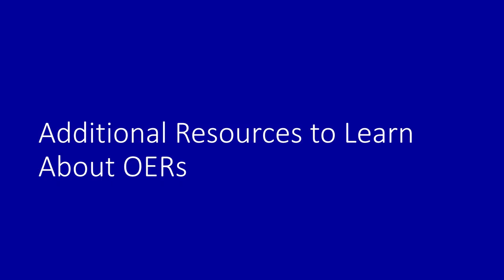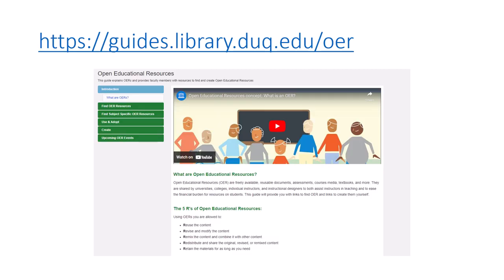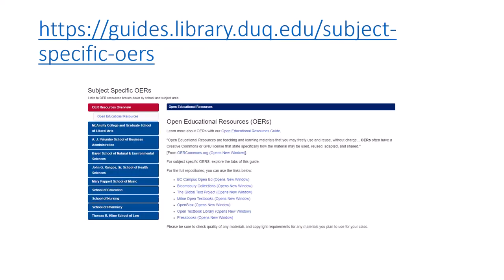At Gumburg Library, we provide a variety of resources for you to learn about OERs and copyright. First is our OER research guide. This guide gives you an overview of what OERs are, links to big collections of OERs, and upcoming events and webinars where you can learn more. Our other research guide is the subject-specific OERs, which includes our recommended OERs based on school and subject area.